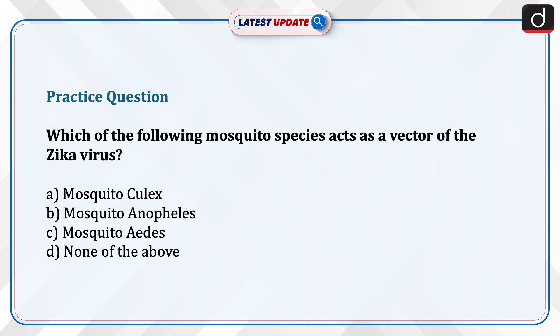Now's the time to test your knowledge. The question is: which of the following mosquito species acts as a vector of the Zika virus? Mosquito Culex, Mosquito Anopheles, Mosquito Aedes, or none of the above? Send the answer to this question in the comment section.